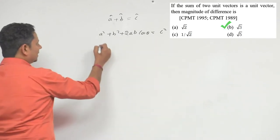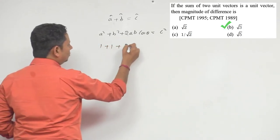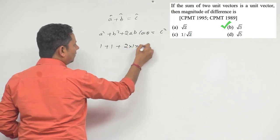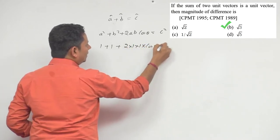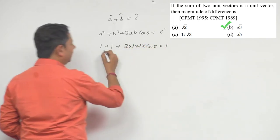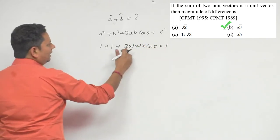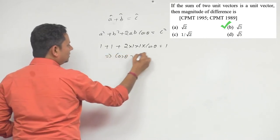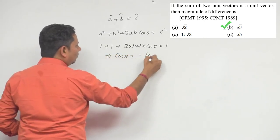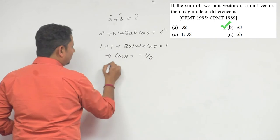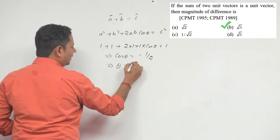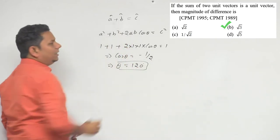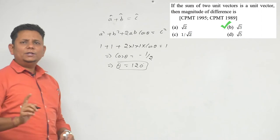Since a, b, and c are all unit vectors, we can write: 1 + 1 + 2 × 1 × 1 × cosθ = 1. So 1 will get cancelled, which implies cosθ = -1/2, which implies θ = 120°. यानि कि a और b इन दोनों vectors के बीच में जो angle है वो 120 degree का है।